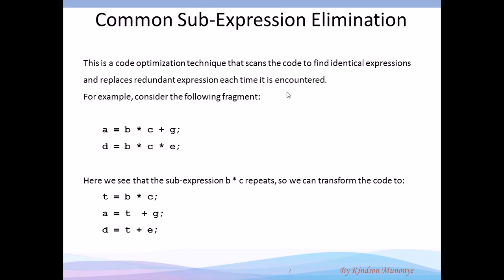So here, what are we talking about? Common sub-expression elimination. If we have sub-expressions that are identical, we simply replace the redundant ones. If we look at this code fragment, we have: a equals b plus c, then b times c plus g, and d equals b times c times a. We can see that the sub-expression b times c repeats itself two times. So in the optimized code, we have t equal to b times c, and anywhere we have the sub-expression b times c, we now use the result of t.